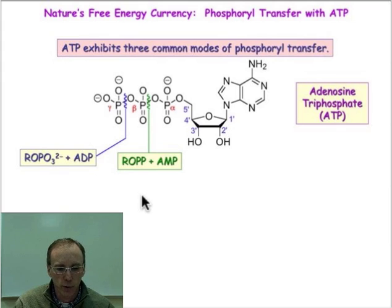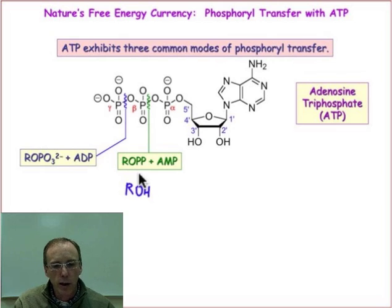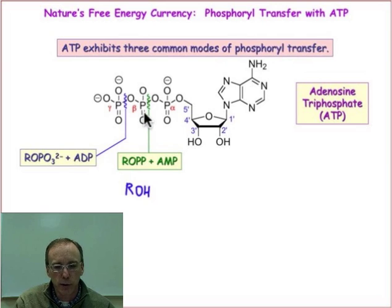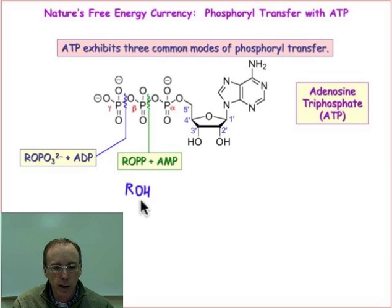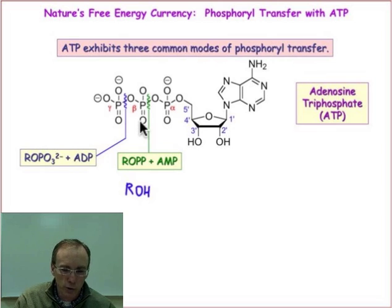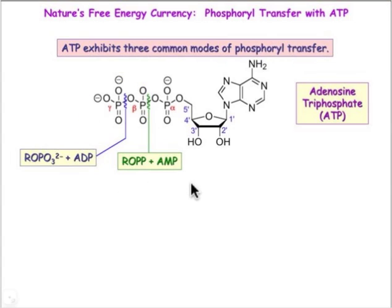A second type of phosphoryl transfer reaction also involves an alcohol, ROH, but it would attack at the beta phosphorus, breaking the indicated bond there. That would leave adenosine monophosphate, and attached to the alcohol would be the pyrophosphate functional group shown here. That's the second type of phosphoryl transfer.